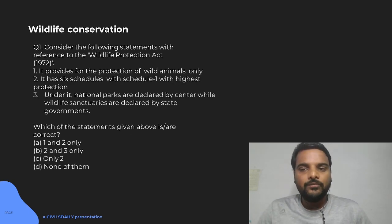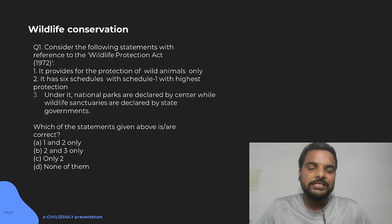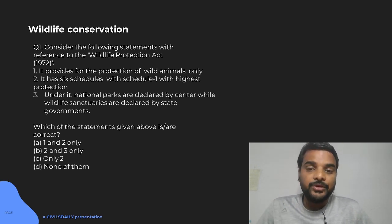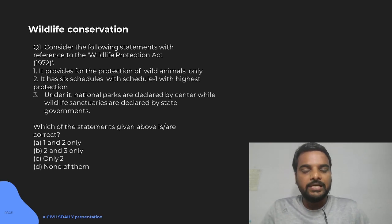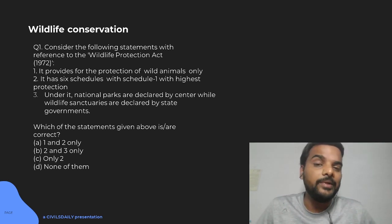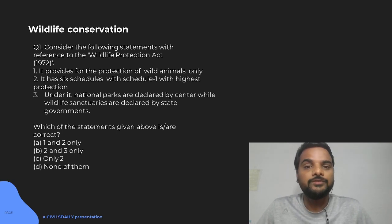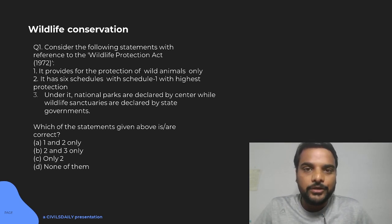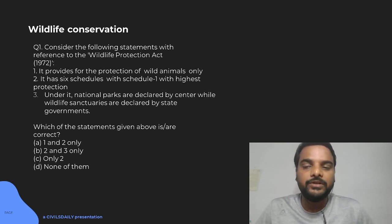Moving on to the first question on wildlife conservation, it is related to Wildlife Protection Act 1972 — probably one of the most important acts you need to know for environment. It provides for the protection of wild animals only — but let's be clear, India needs to protect not only wild animals but also wild plant species. Schedule 6 provides for protection of certain plant species like Red Vanda, Blue Vanda, Kath, and others threatened by human population. So statement 1 will definitely not be true.